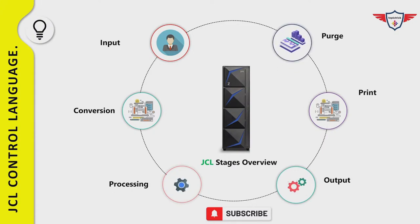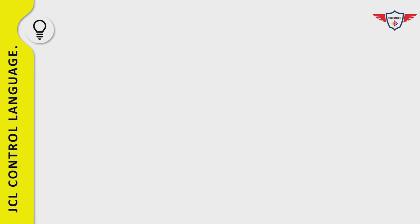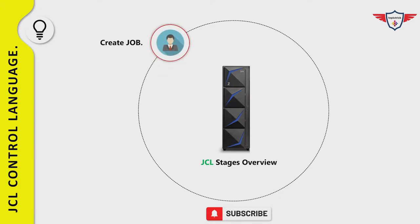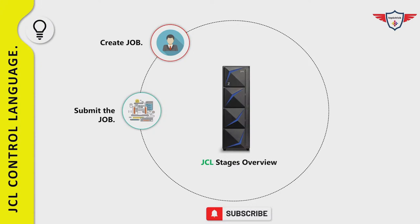Let's understand the significance of each stage with the help of an example. A programmer wants to calculate the monthly tax for a specific department. As a first step, he will write a JCL with all relevant information such as the program name, input-output dataset names, and accounting information to specify in a job card. In the second step, the programmer carefully reviews the job and submits it for execution.